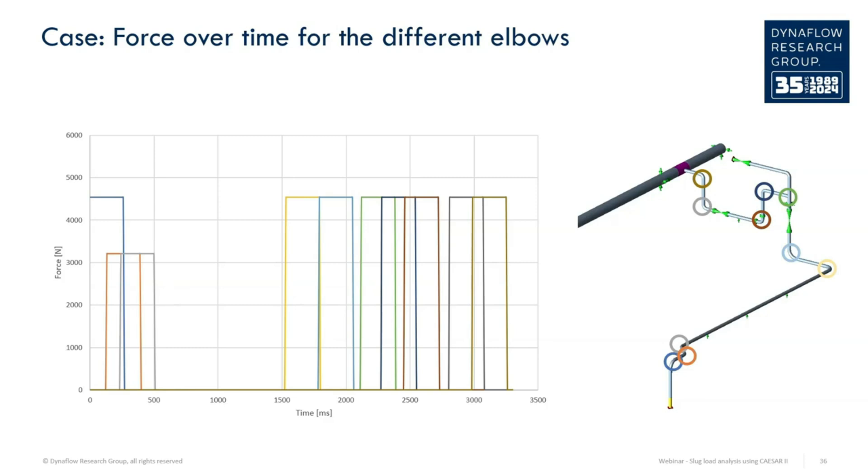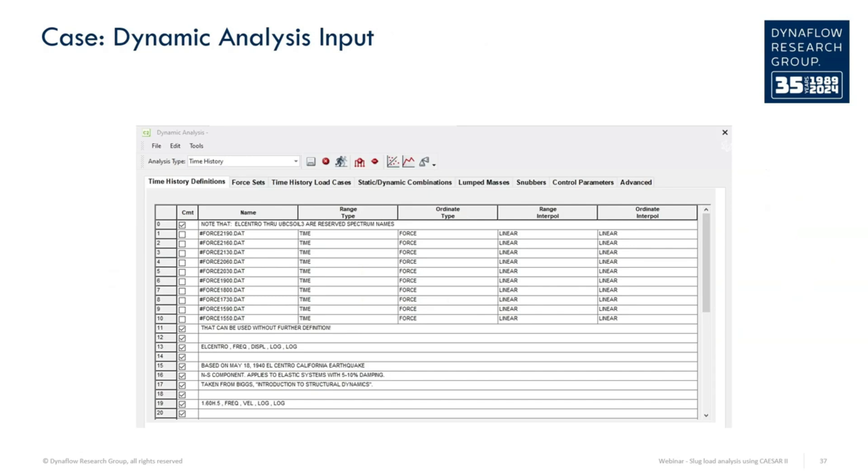I created a time history for each of the elbows containing the loading over time. The colors in the graph match up with some of the colors in the picture. We can recognize the long horizontal pipe section because of the lack of loading, as well as the two 45-degree elbows, which have a lower load applied to them. We can create a dynamic analysis with this information that is more elaborate than the modal analysis shown before.